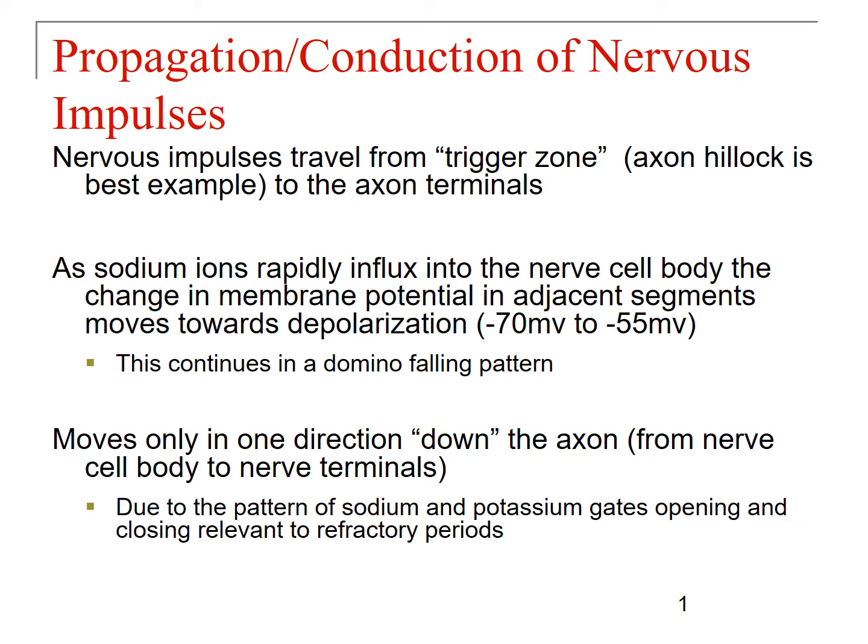In this video we're going to talk about the propagation and conduction of action potentials, and we're also going to spend some time talking about graded potentials. Nervous impulses will travel from the trigger zone — the axon hillock is our trigger zone for action potentials — all the way down to the axon terminals.